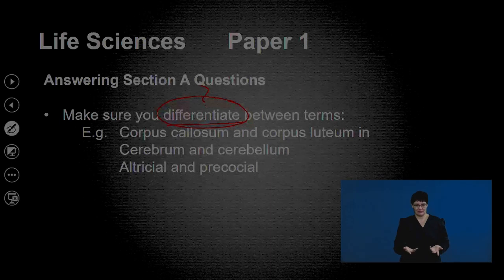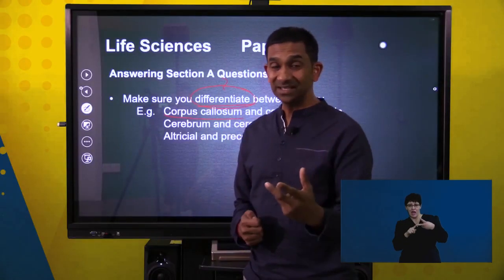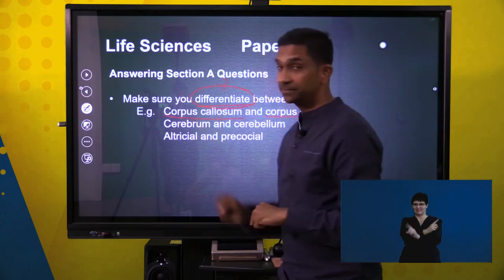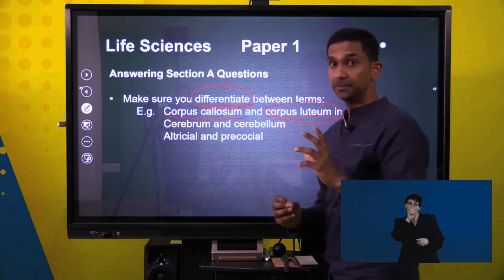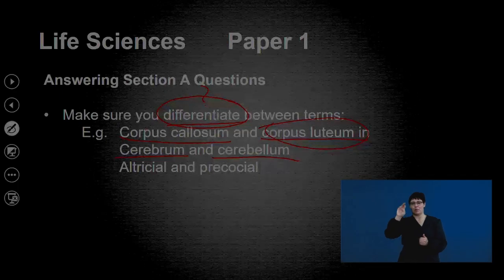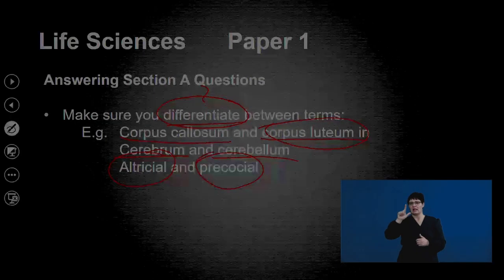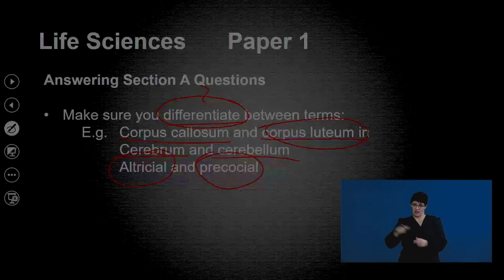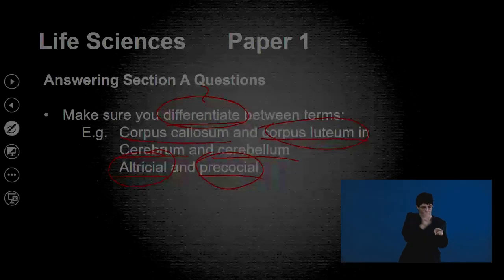When we look at the nervous system, a question may ask you to differentiate between the corpus callosum and corpus luteum. In biology, terms are often similar but used interchangeably incorrectly. The corpus callosum is a part of the brain, while the corpus luteum is part of the reproductive system. Identify similar terms and know how different they are. A clear, distinct vocabulary list prevents these confusions from costing you marks.